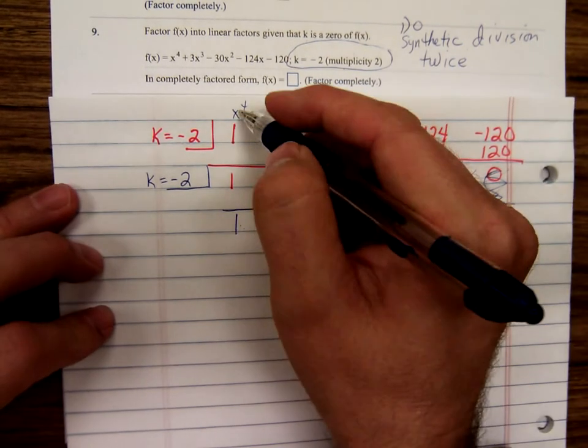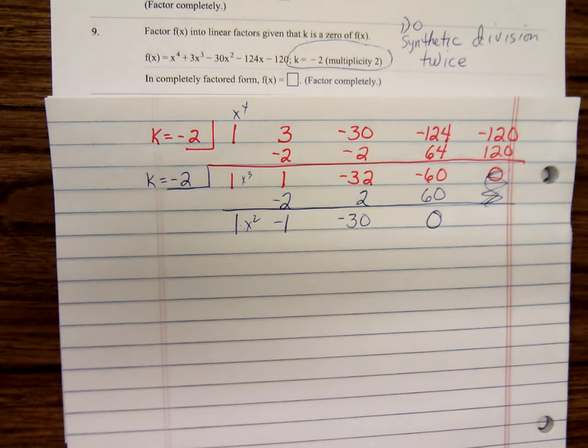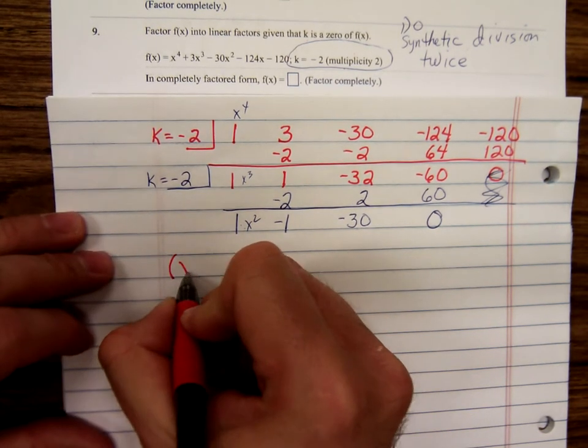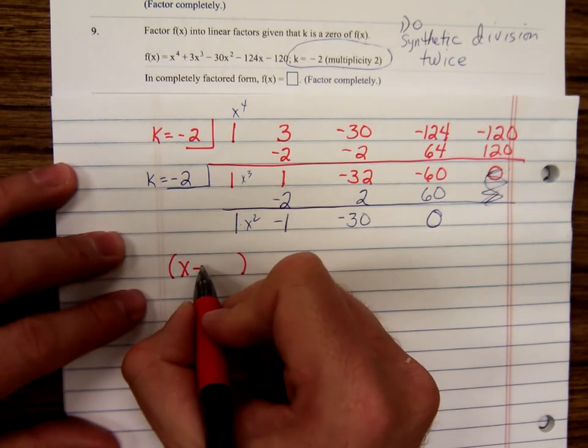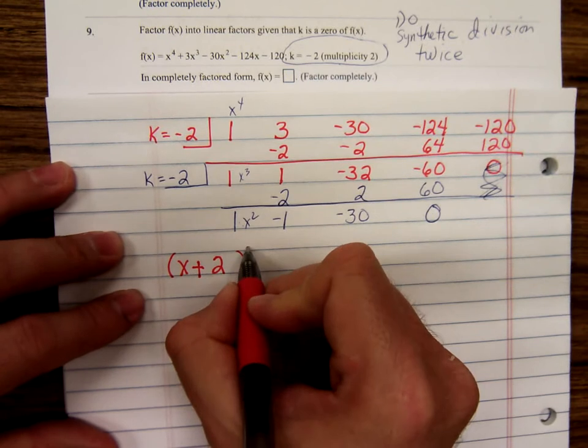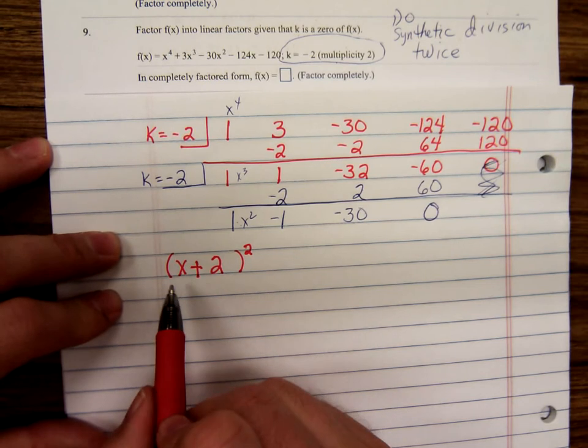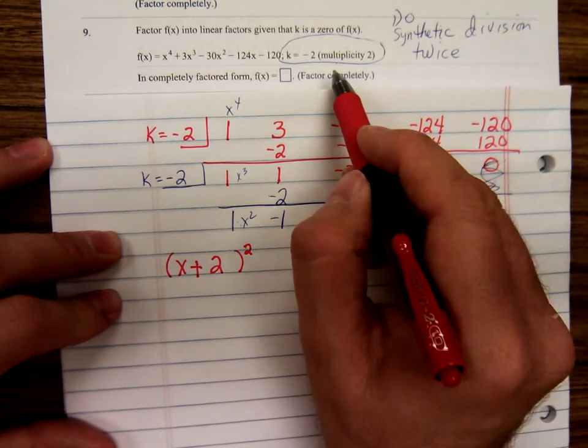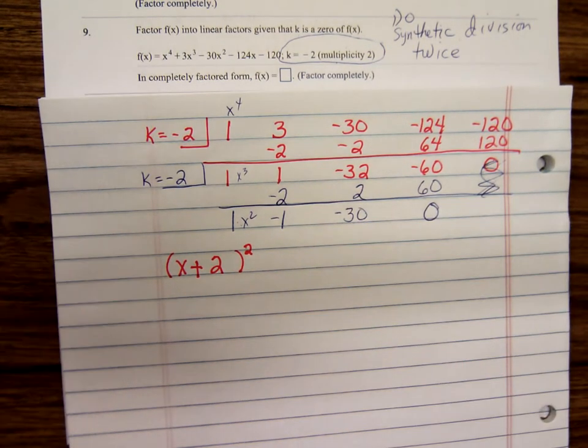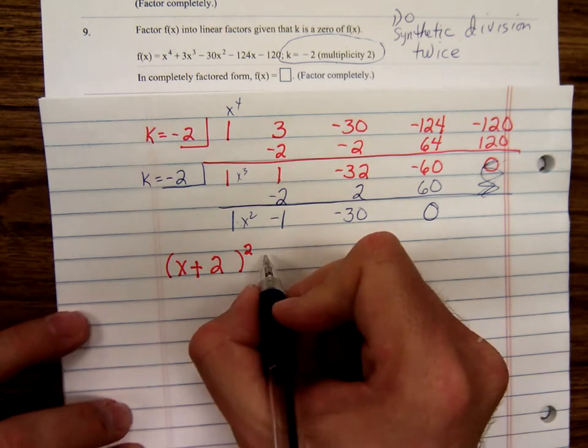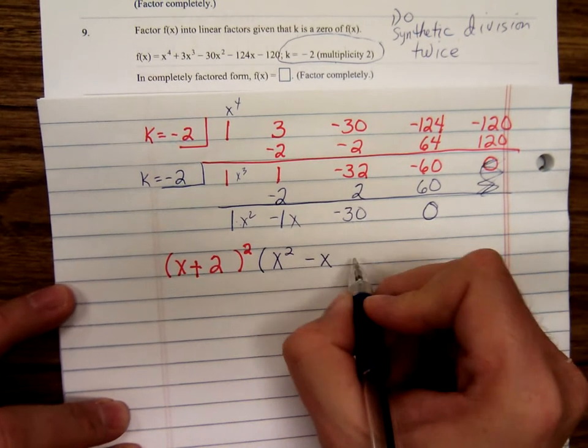So, we went from x to the fourth to x to the third. Now we're down to an x squared. So, to write out the factored form, you first go x minus k. The k is a negative two, so x minus a negative two. And that x minus k will factor twice. So, we write x plus two squared. If it is in multiplicity three, you do synthetic division three times and put an exponent cubed. Now, let's see. Here, we'd have one x squared minus one x minus 30. So, let's factor that.